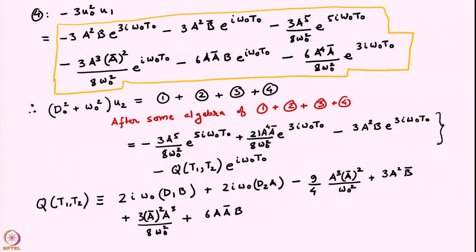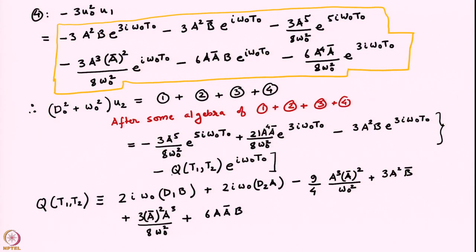It can be written in this manner, where our interest is only in this particular term. Why? Because we do not want to go up to order epsilon squared. Recall that we wanted only the variable b, which was a function of t1 and t2. We are not going to go up to t2, so we want to determine b as a function of t1. For that, we need to find the resonant forcing terms at this order. The resonant forcing term is only this term.